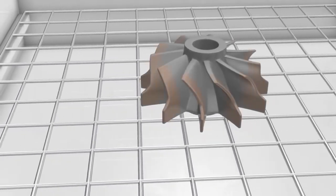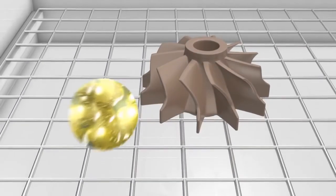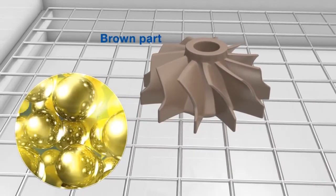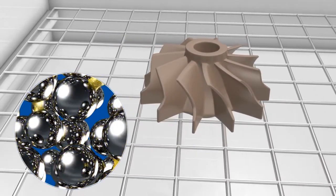Exposure to a catalyst releases the patented binder. The low temperatures mean that the so-called brown part remains inherently stable.